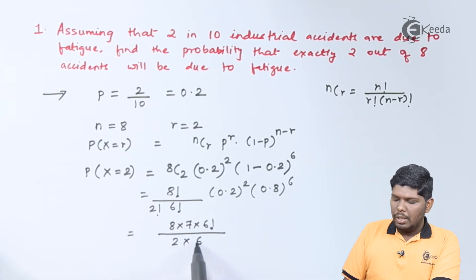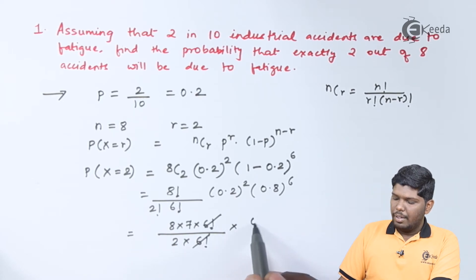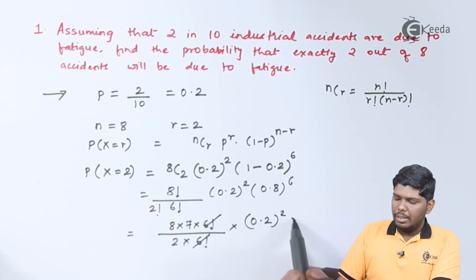2 factorial is 2, and here 6 factorial will be cancelled. Further we have (0.2) squared times 0.8 raised to 6.